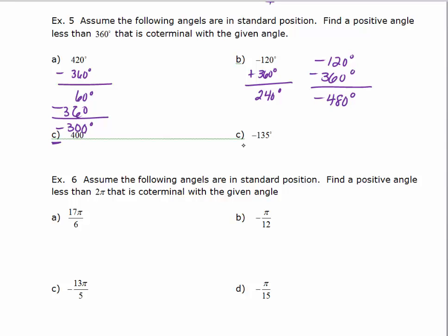Pause the video and try parts C and D — find a positive coterminal and also a negative coterminal. For 400 degrees, subtract 360 to get 40 degrees — that's the positive coterminal. To find a negative coterminal, subtract 360 from 40, giving negative 320 degrees. Both 40 and negative 320 are coterminal angles. There are an infinite number of coterminal angles — just keep adding or subtracting multiples of 360.